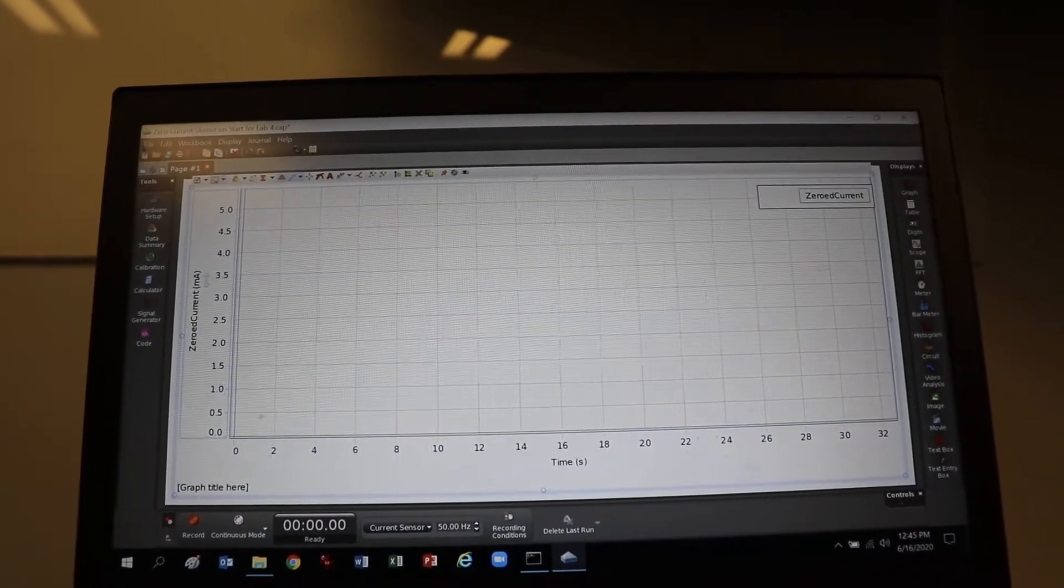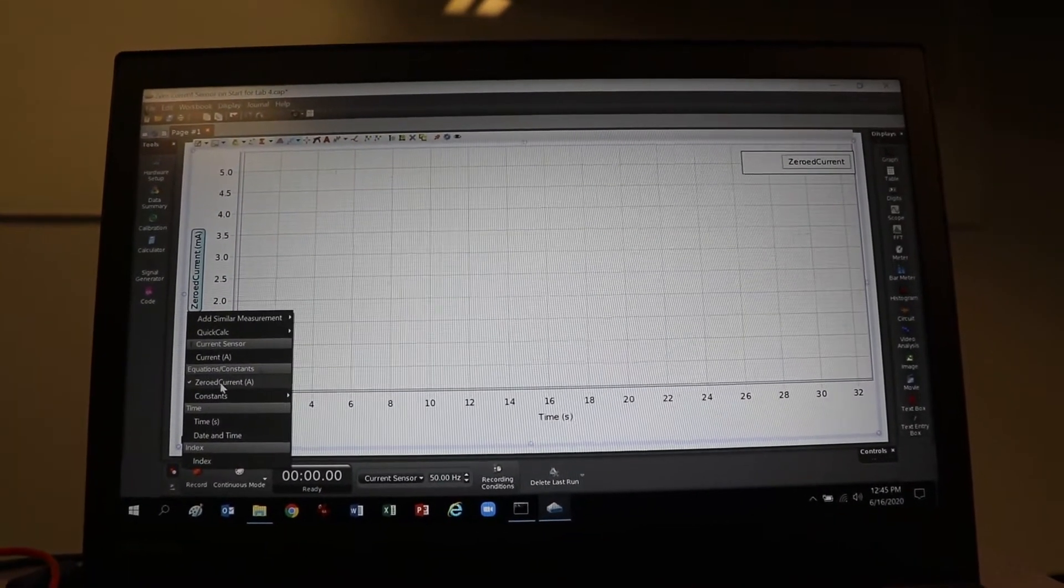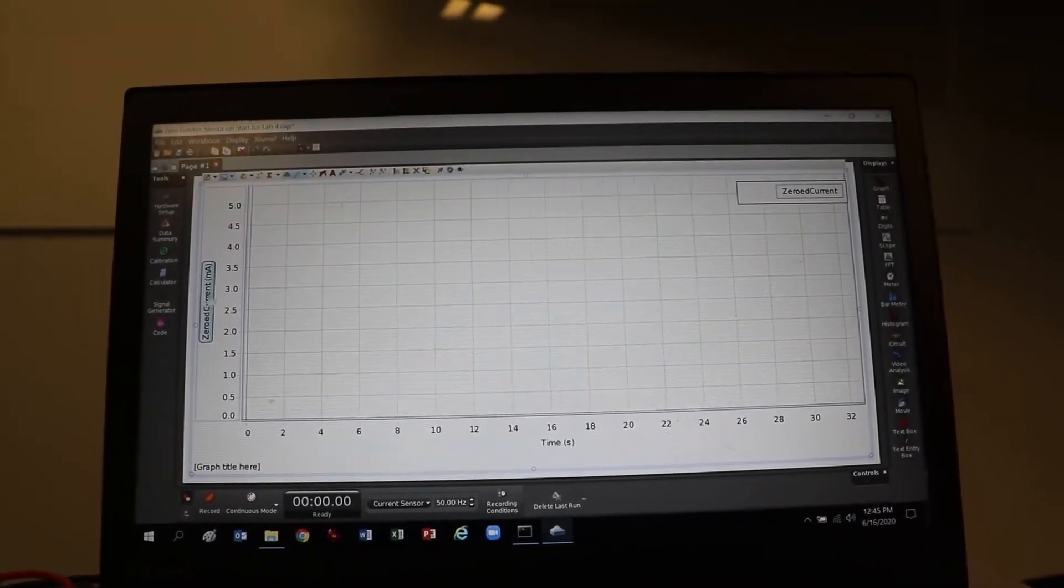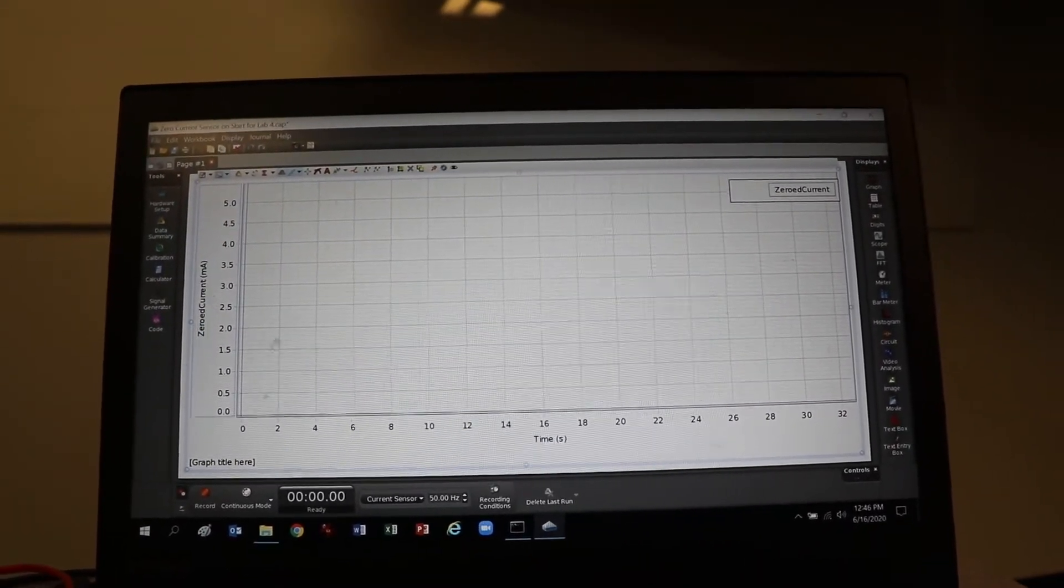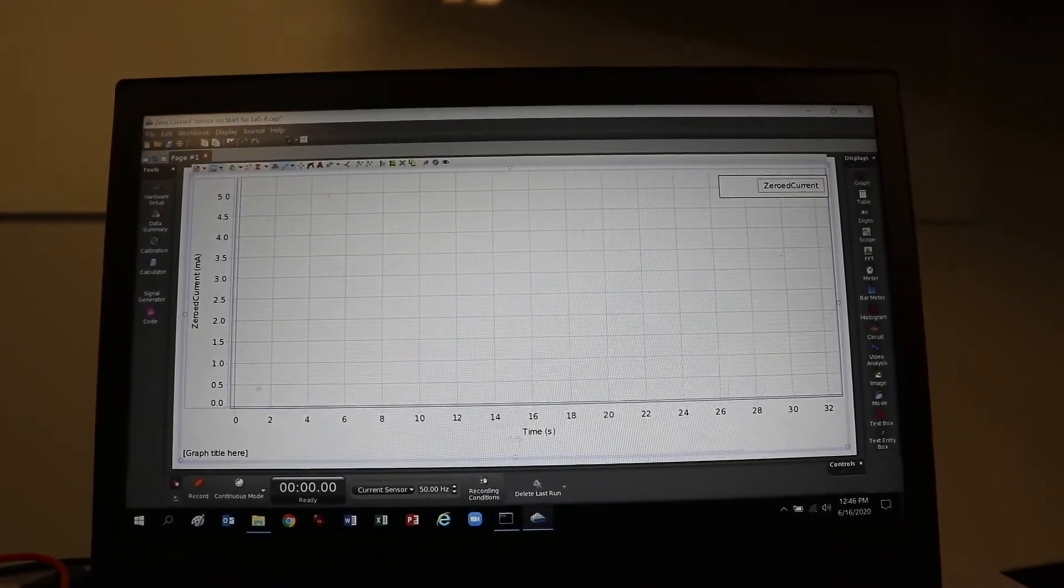So we're going to look at the current, which is on the y-axis, so you click on that and I clicked zero current because the sensor doesn't zero itself. So I wrote a little program that'll zero the sensor so we'll get nice clean data, and here's time on the bottom.